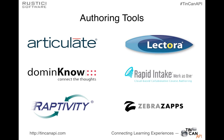Some of these traditional authoring tools — you'll recognize a lot of these names: Articulate, Lectora, Domino, Rapid Intake, Reptivity, Zebra Daps from Allen. These guys are all getting on board and updating their tools to use Tin Can. Their motivations are several-fold: more robust tracking, some had problems getting SCORM to work across a variety of platforms, many are using it for mobile support, and a lot are also motivated by being able to host their content cross-domain rather than just within a learning management system.